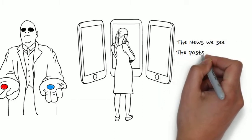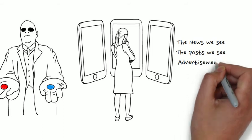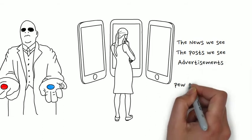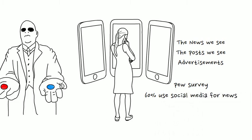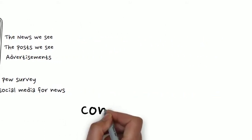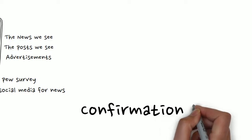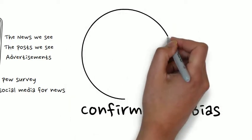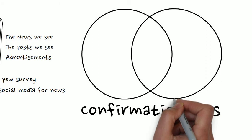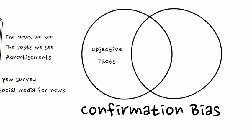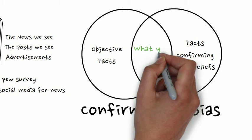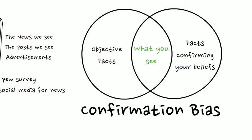A recent Pew survey found almost 60% of us regularly use social media for our news, but we are complicit in constructing our artificial world by creating a confirmation bias. When it comes to controversial topics including politics, if you're like most people, the majority of your friends and followers on social media probably share your outlook. This means that the vast majority of tweets, Facebook posts, pins, or other content you read on these sites tend to express the same point of view as your own.